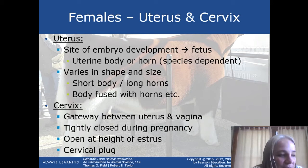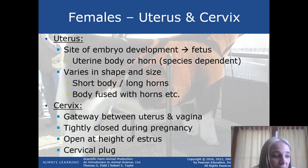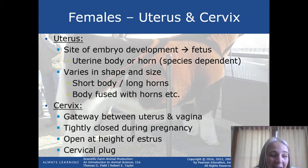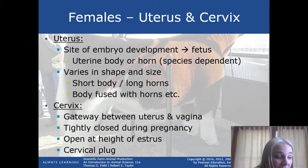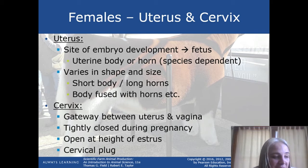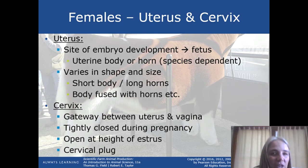Now for the uterus. The uterus is where the embryo develops into a fetus, and it stays there until parturition, which is another word for the birthing process. An embryo becomes a fetus when the placenta starts to develop, about a tenth of the way into the pregnancy. The uterus varies in shape and size from species to species. Some have a very short body but long uterine horns, like the sow. Others have a large uterine body mostly fused to the horns, like the mare. In the sow, embryos develop in the uterine horn, whereas in the mare the embryo develops in the body of the uterus — reflecting the logic of a sow having a litter.